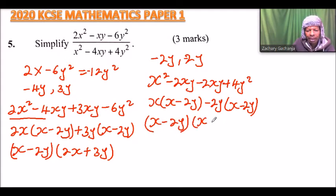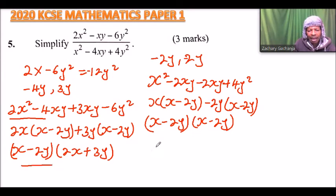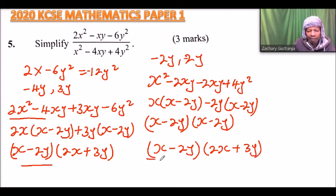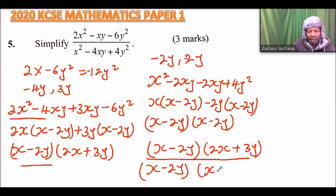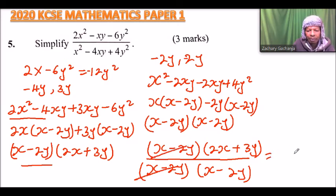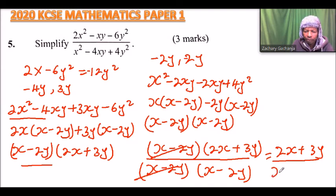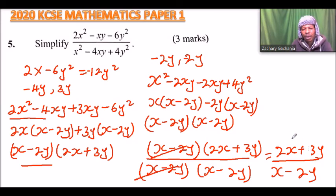Factoring out the common factor (x minus 2y), the denominator becomes (x minus 2y)(x minus 2y). Now because we are dividing, we write the numerator (x minus 2y)(2x plus 3y) divided by (x minus 2y)(x minus 2y). The common factor (x minus 2y) cancels, and we are left with (2x plus 3y) divided by (x minus 2y). That is the furthest you can simplify these two expressions.